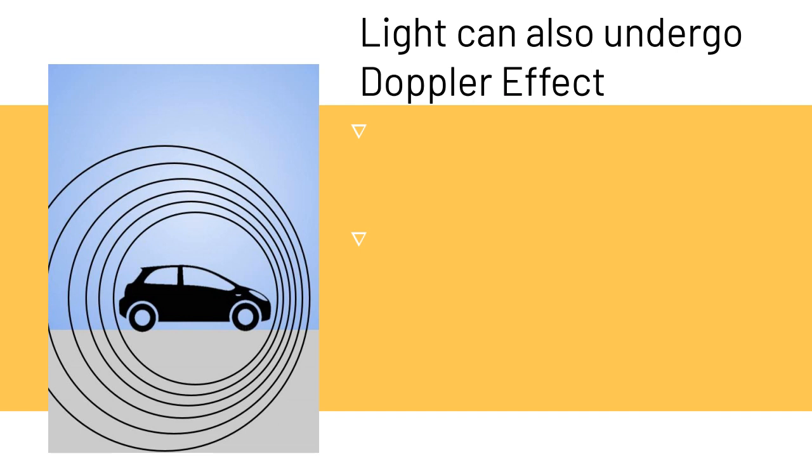Interestingly, light can also undergo the Doppler effect. Because light is a wave, we find the Doppler effect happening with light as well. In astronomy, we see the Doppler effect far and wide. Light is either red-shifted, meaning the light is moving away from us, or it's blue-shifted, meaning the light is moving towards us.